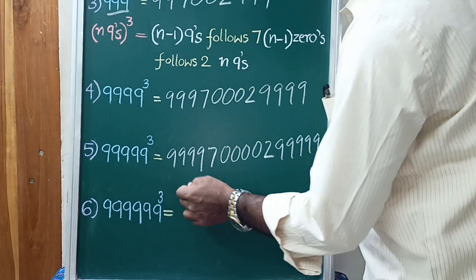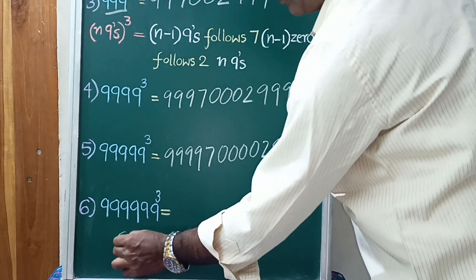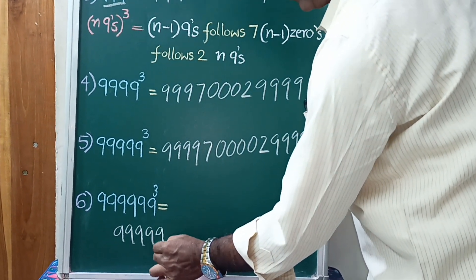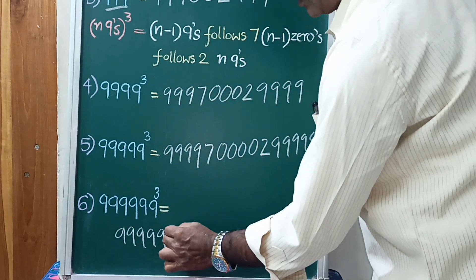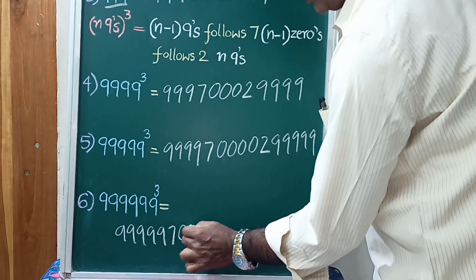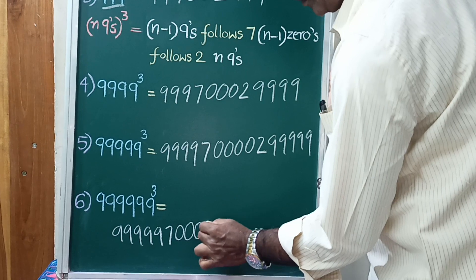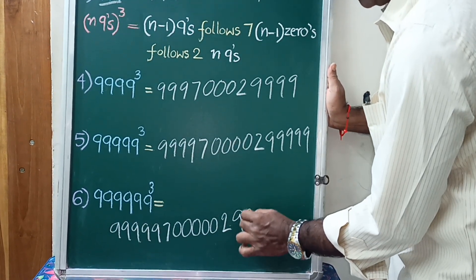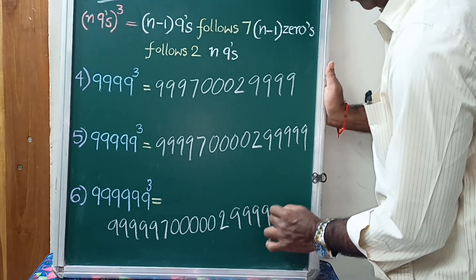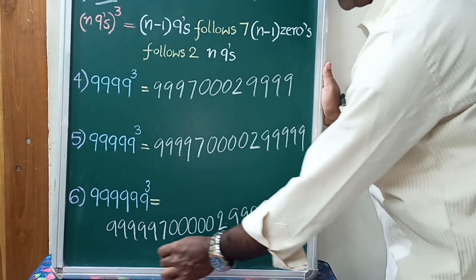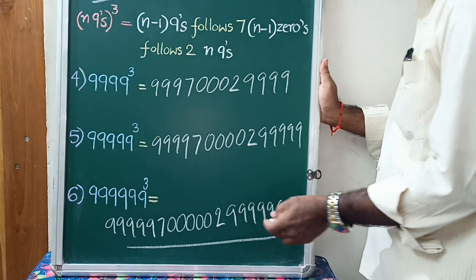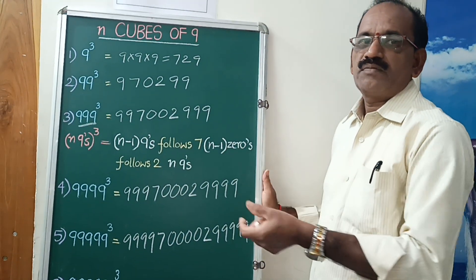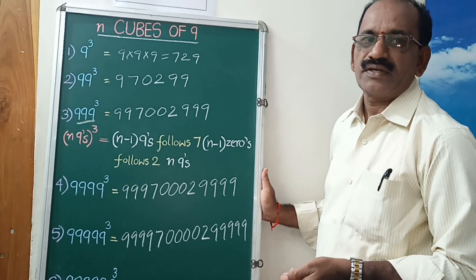999999 cube: 5 9's, follows 7, 5 0's, follows 2, 6 9's. Thank you.